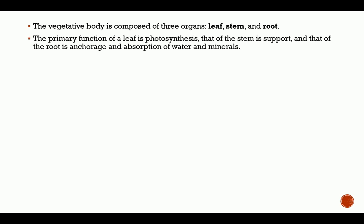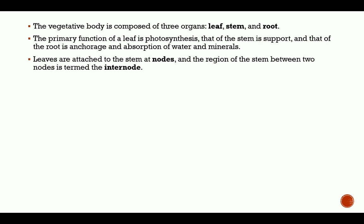The vegetative body is composed of three organs: the leaf, the stem, and the root. The primary function of a leaf is photosynthesis, the stem provides support, and the root provides anchorage and absorption of water and minerals. Leaves are attached to the stem at nodes, and the region of the stem between two nodes is termed the internode. The stem together with its leaves is commonly referred to as the shoot.